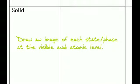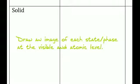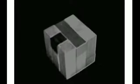So for each of the different states besides Bose-Einstein, you need to draw an image of the state and phase at the visible and atomic level, in addition to including a description. This is an example of a picture at the visible level for a solid. And this is an example of at the atomic level. You can review the video earlier or by going into the presentation screen and watching it at your own pace.